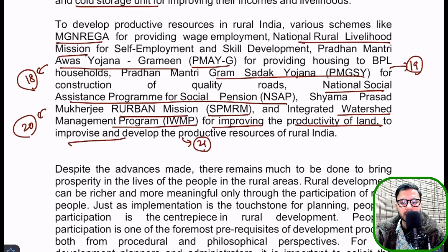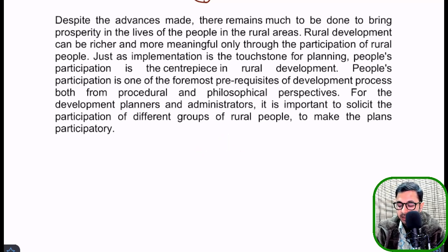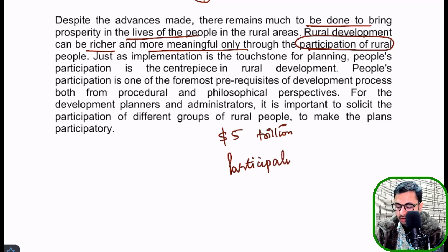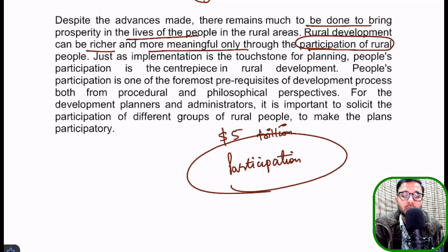You can pause the video to read exactly what has been written. The objective is to tell the reader that productive resources need to change, and these schemes are trying to do that in rural India. For the conclusion, you can be optimistic and talk about the five trillion economy, or focus on participation: 'Despite the advances made, there remains much to be done to bring prosperity to rural people. Rural development can be richer and more meaningful only through the participation of rural people.' Increasing participation comes through awareness, education, and providing good services.